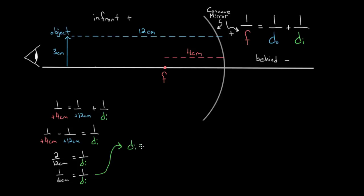The image distance came out to be positive six centimeters, which is important. Since it's positive, our image is in front of the mirror — about six centimeters from the mirror, somewhere around here. But we don't yet know how big it's going to be or whether it's right side up or upside down. To figure that out, we have to use a different equation.